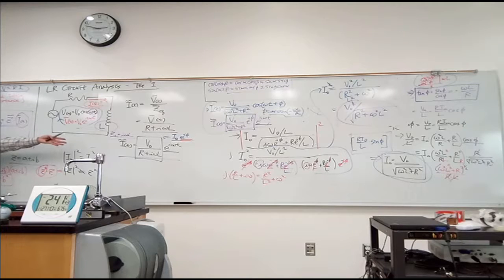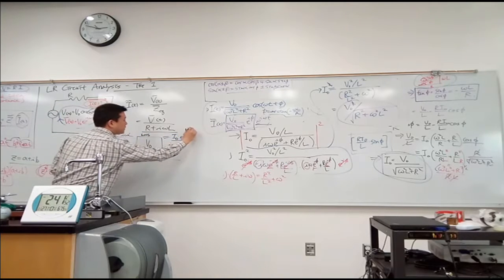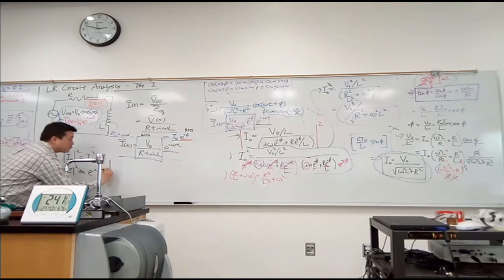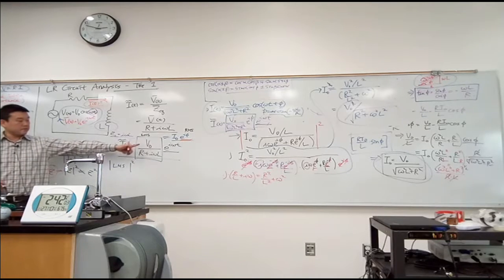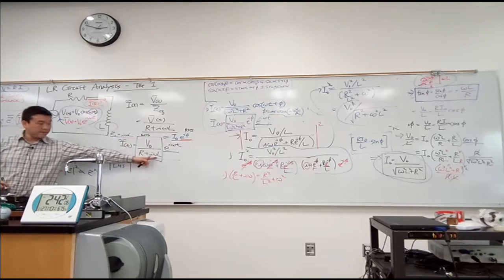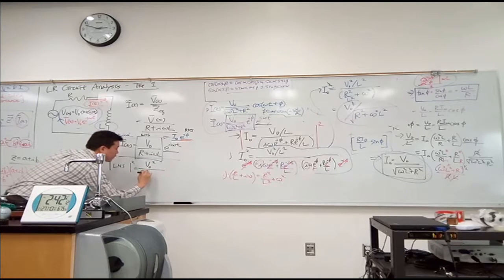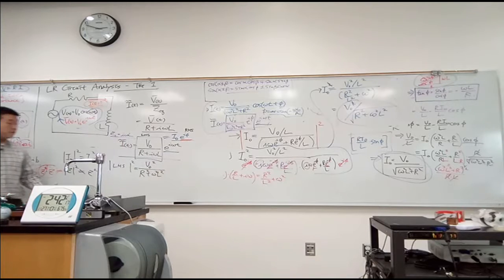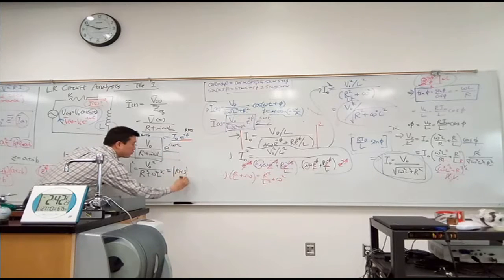So I do the exact same operation I did before, except this time it's simpler. Let me call this my left-hand side. Call this my right-hand side. So I am going to take the absolute value squared of the left-hand side. And when I do that, so it's V₀ over, this is the real and imaginary part. So it will be V₀² over R² plus ω²L². Right?